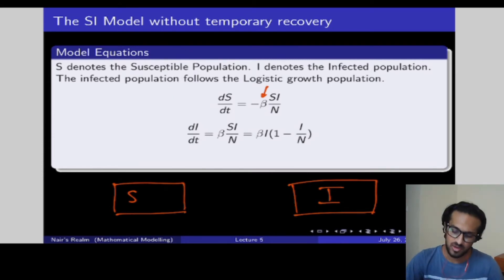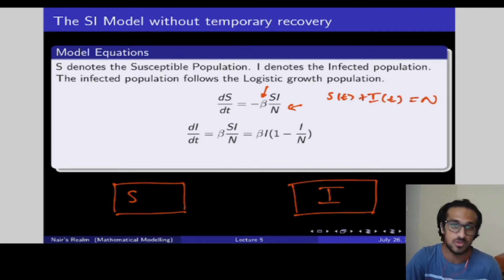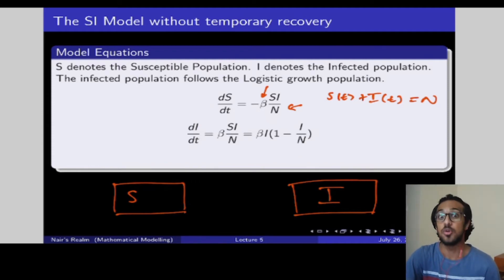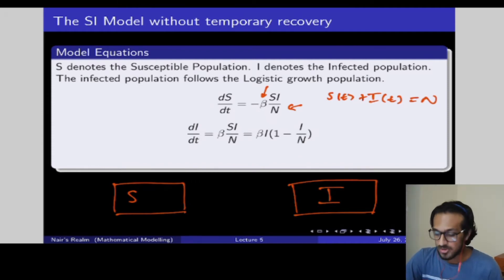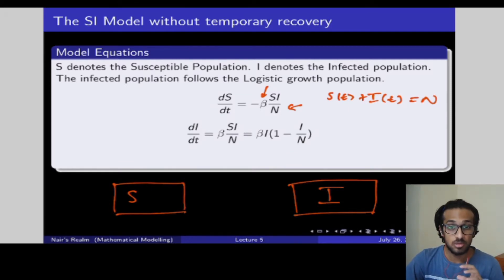N is the total population, so S(t) plus I(t) equals N at any instant of time — it's a constant population that is not growing. That's what we discussed. Now, how can we use this model to discuss or model the spread of a rumor or fake news? That's what we're going to be looking at today.